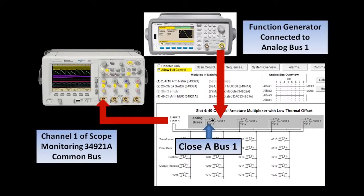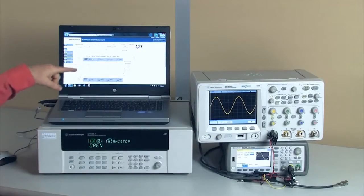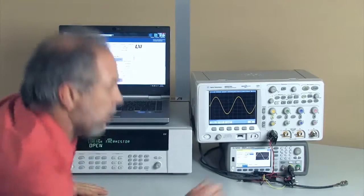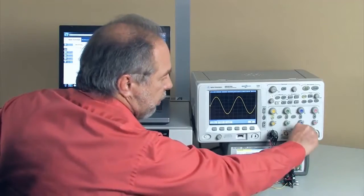So now that I have the sine wave on the analog bus, by closing any one of these 20 switches, I could route that signal to any one of those 20 positions. So I've wired up a cable to switch number 5, and I'm going to close switch number 5, and you'll see that signal is now coming out switch 5. So here's the cable that's connected to switch number 5.